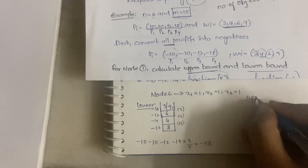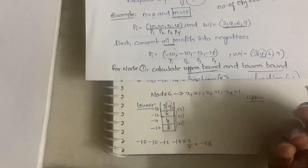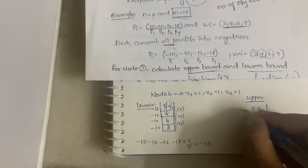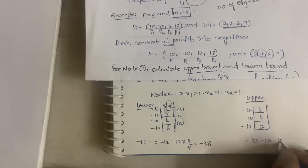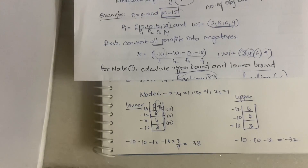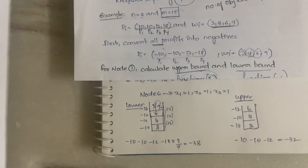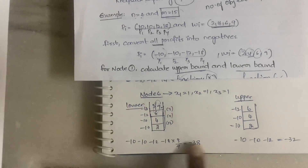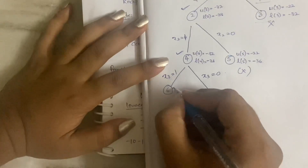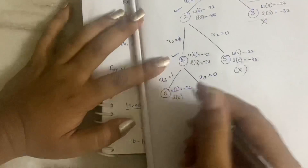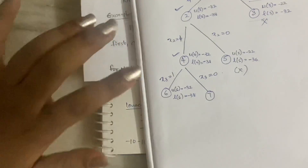Now for the upper bound of node 6: same three elements are taken, but no fraction — we take weights 2, 4, 6 with profits minus 10, minus 10, minus 12, giving an upper bound of minus 32. Since I explained everything in detail in Part 1, I'm making this quicker. So for node 6: upper bound = minus 32, lower bound = minus 38.